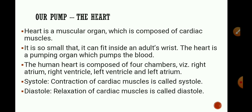The heart is our pumping organ because with its help we can supply oxygenated blood to each and every part of our body. The human heart is composed of four chambers. Two upper chambers are called auricles or atria — these are thin-walled. Two lower chambers are called ventricles — these are thick-walled. So we have right atrium, right ventricle, left ventricle and left atrium.